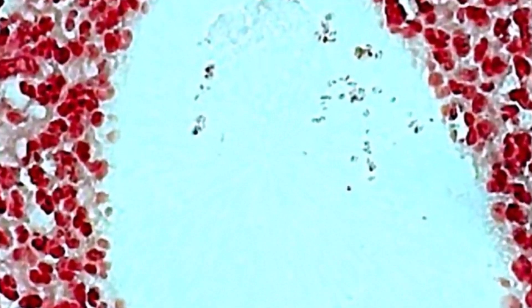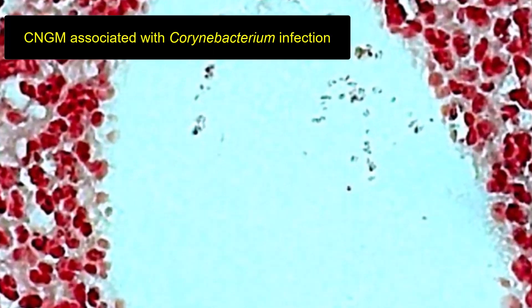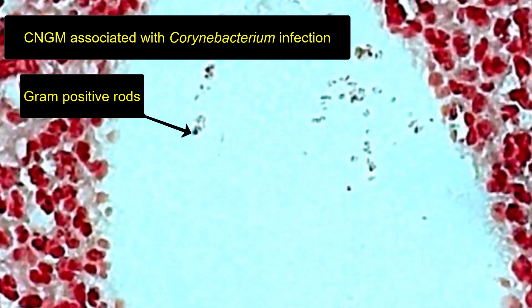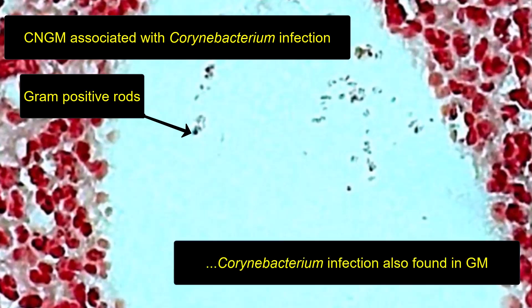It has been postulated that Corynebacterium infection plays a causal role in CNGM, as rod-shaped gram-positive bacilli may be visualized in some cases within cystic spaces, with infection confirmed via culture and sequencing methods. However, not all cases of CNGM are associated with Corynebacterium infection, and Corynebacterium has also been found in cases of granulomatous mastitis without features of CNGM.